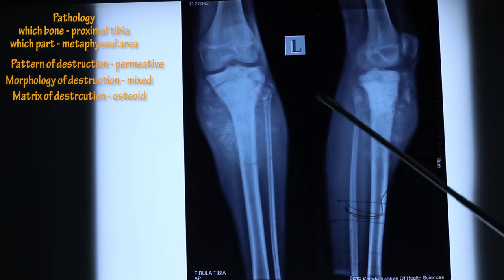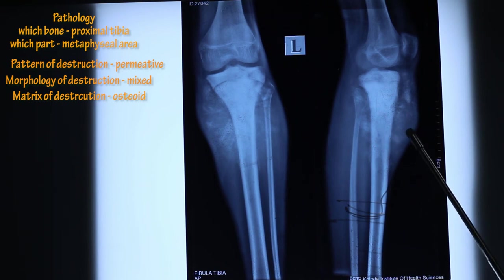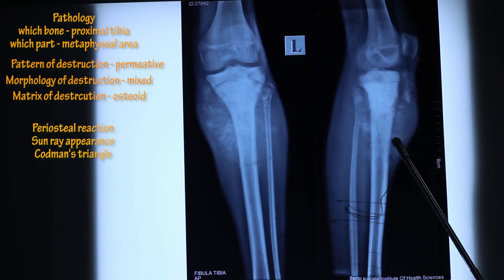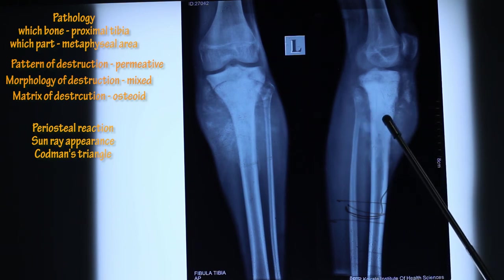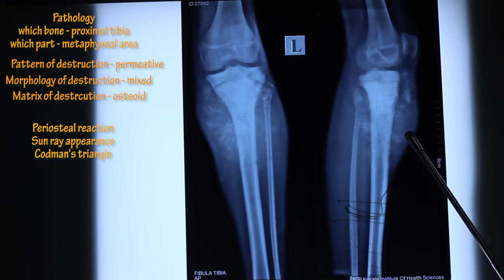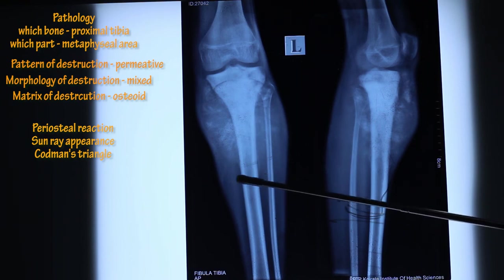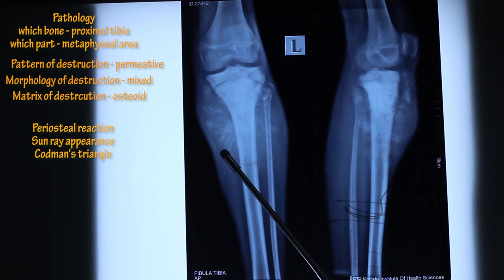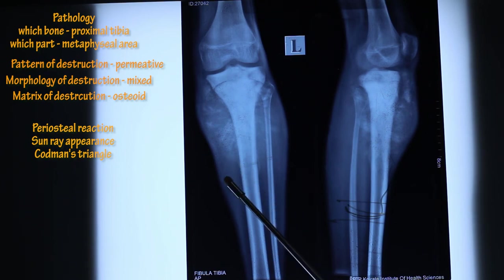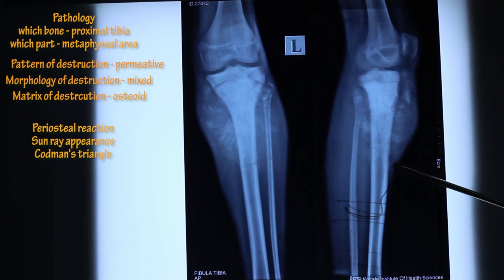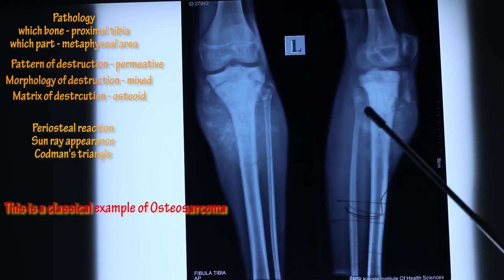Next, look for the periosteal reaction. On the lateral view, you can see periosteal reactions which are perpendicular to the bone — this is called the sunray appearance, which is a radiating periosteal reaction. You can also see the elevated periosteum here, along with a few sclerotic areas. And this is the Codman's triangle.